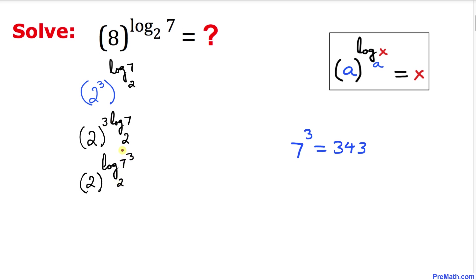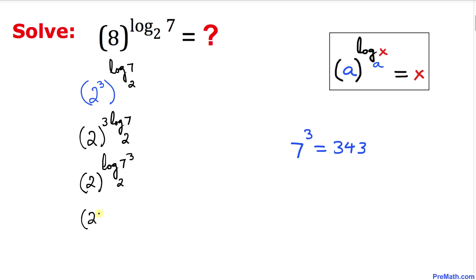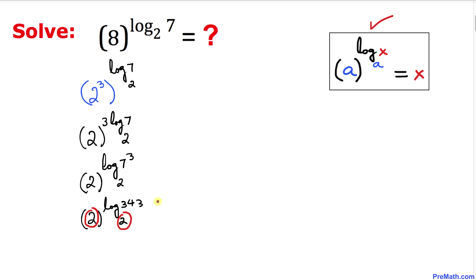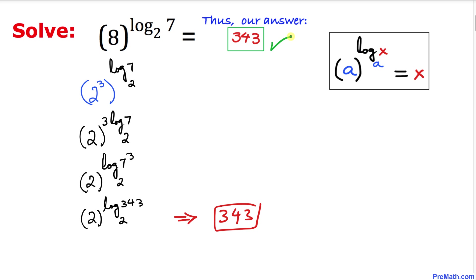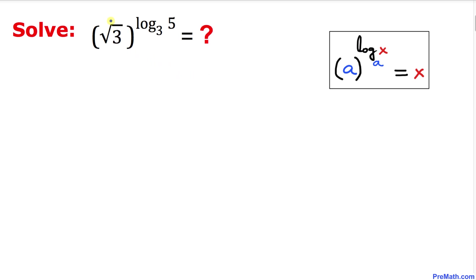Now 7 to the power 3 equals 343, so this becomes 2 to the power of log of 343 with base 2. We can see the base and the logarithmic base are now the same, so we can apply the formula. Our answer is therefore 343.